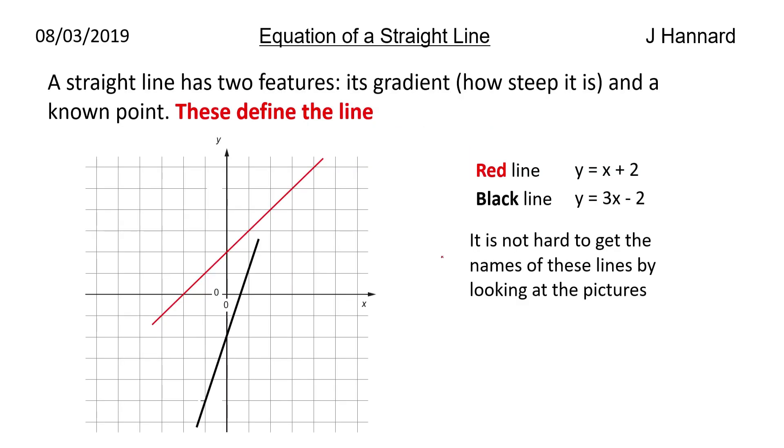A straight line has two features as we've discussed: it's got a gradient, which is how steep it is, and a known point, and these define the line. If we look at the graph there, the red line, we know that the gradient is for every one along it goes one up so the gradient is one. For the other one, for every one along it goes three up so it's three. So the red line is y equals x plus two and the black line is y equals three x minus two. It's not hard to get the names of these lines by looking at the pictures, you know, we can count how many squares along it goes to work out the gradient. But the question is, can we name a graph without its picture?